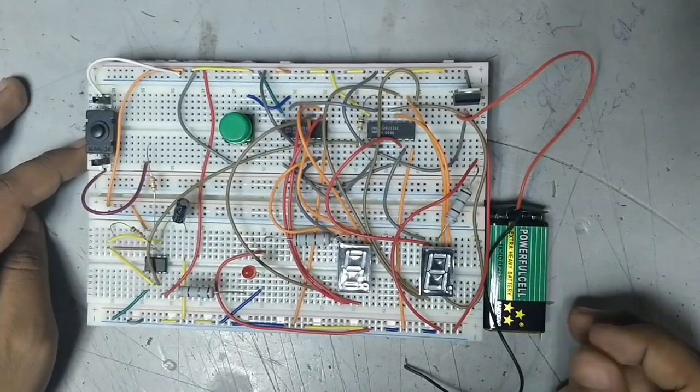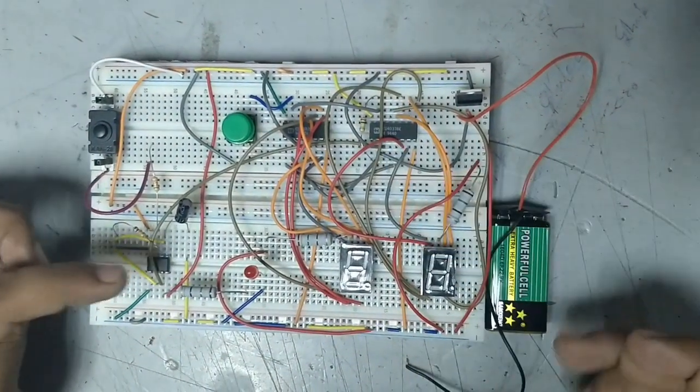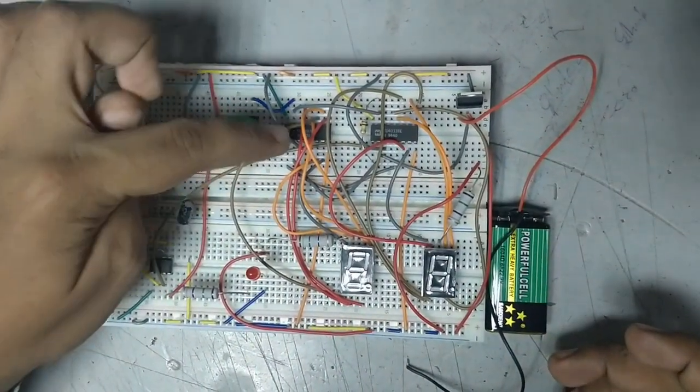We have to use this IC for counting the duty cycle of the 555 timer and show it on the seven segment displays.